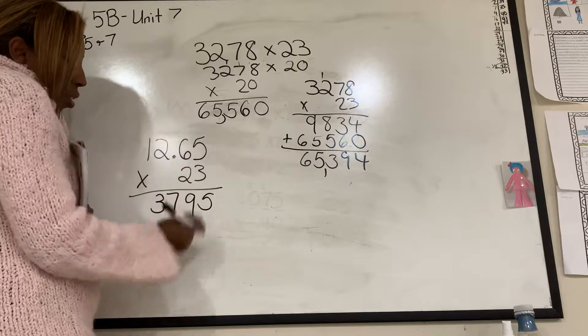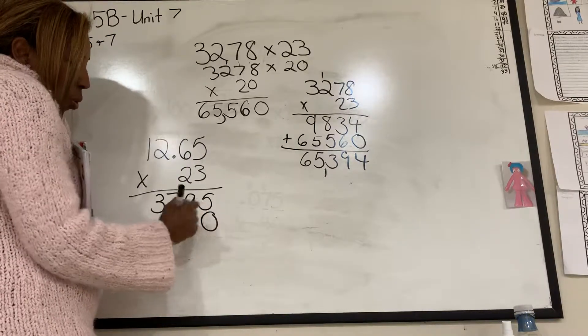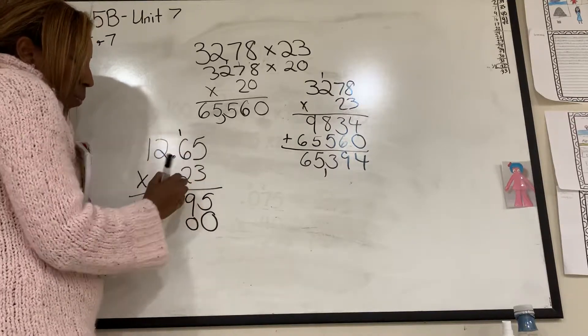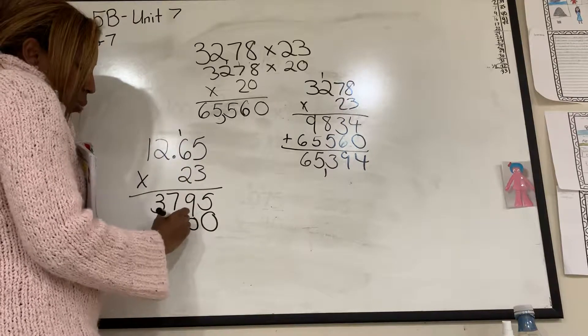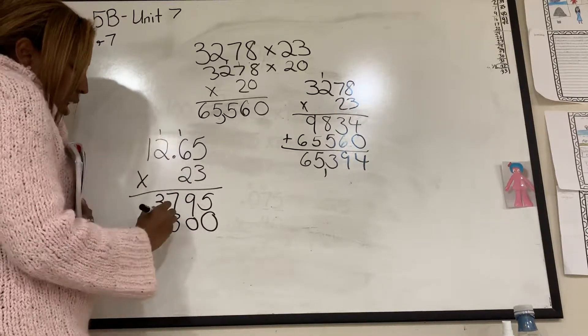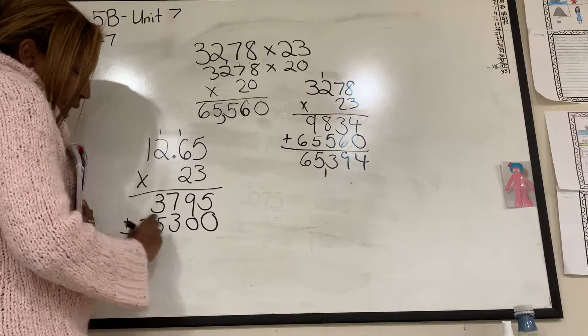Now I'm going to erase these little things so I don't get confused. I'm going to this number, so I have to put a 0 to hold the spot. 2 times 5 is 10, put down a 0, carry the 1. 6 times 2 is 12, plus 1 is 13, put down a 3, carry the 1. 2 times 2 is 4, plus 1 is 5, put down a 5. 2 times 1 is 2.